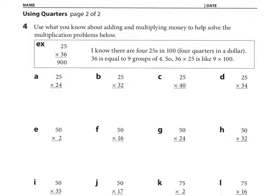Moving on to number four, use what you know about adding and multiplying money to help solve the multiplication problems below. The example says 25 times 36 equals 900. I know there are four 25s in 100, four quarters in a dollar. 36 is equal to nine groups of four. So 36 times 25 is like 9 times 100. So using that same thinking, let's look at A, 25 times 24. Isn't that just the problem we had on number three? Yes, it is. So what did we say the answer was? 600.